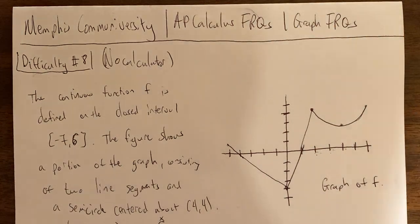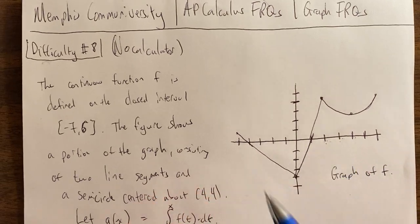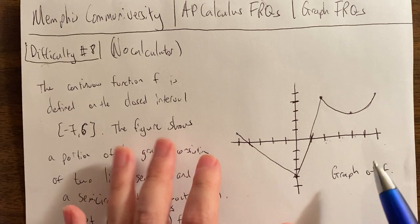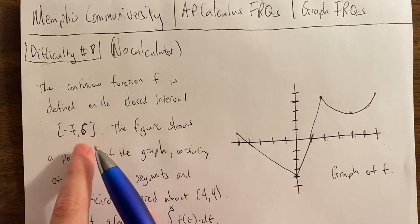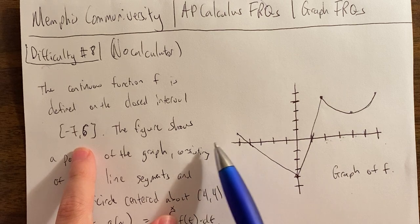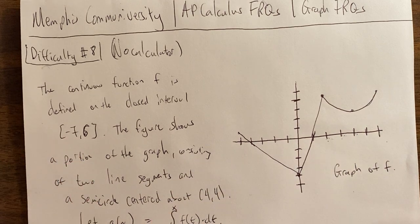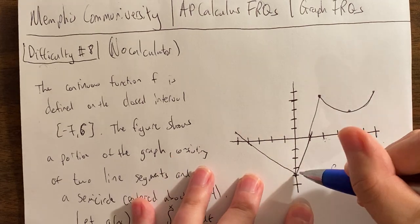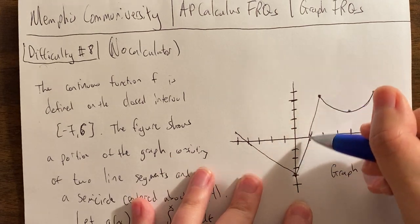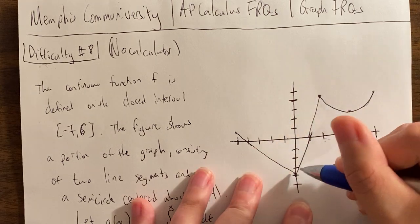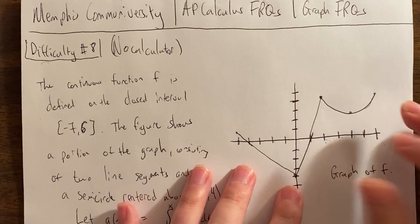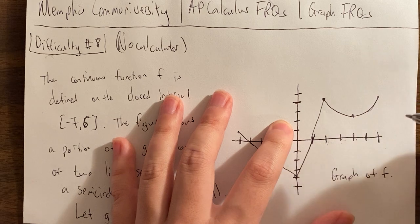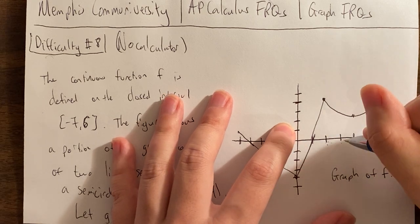So let's talk about this graph. My graph is not the prettiest, but it looks like we are going from negative 5 to 6. We have a graph of f, and then a portion of f we can't see going from negative 7 to negative 5. Looks like we have two line segments. This is supposed to be one single line — notice it goes up 4, runs 1, so the slope is 4. And then this is supposed to be a semicircle. This point is at 1, 2, 3, 4, 2.